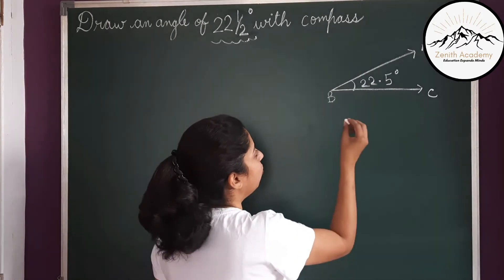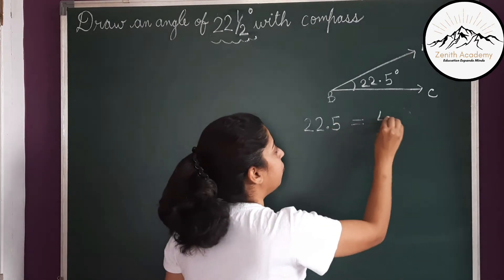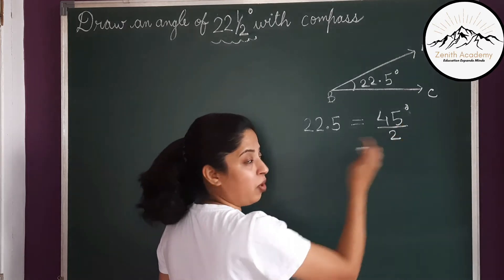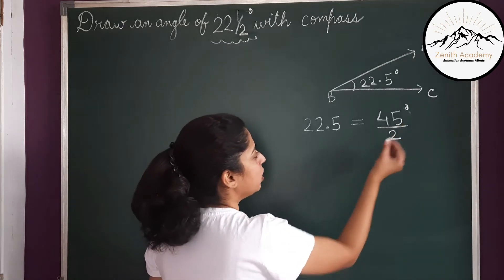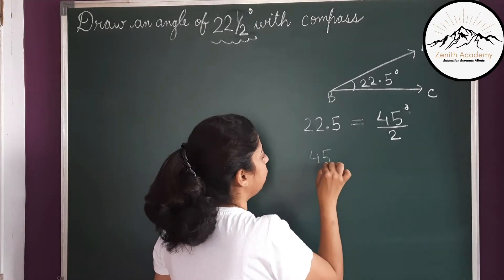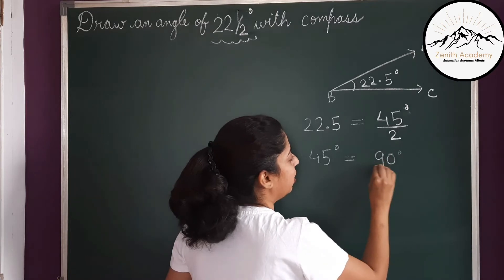You should remember what is 22.5? It is half of 45 degree. So bisector of 45 degree. And what is 45 degree? 45 degree is half of 90. So 45 degree is half of 90, that is 90 divided by 2.